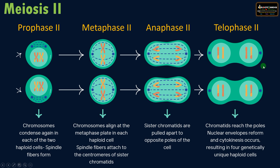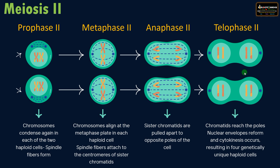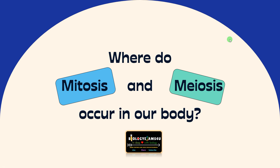Meiosis two is just like mitosis — two haploid cells divide to form four haploid cells — which is why meiosis two is also called equational division. The major difference between meiosis one and meiosis two is that in meiosis one, during anaphase, homologous chromosomes are separated, whereas in meiosis two, during anaphase two, sister chromatids are separated. In summary, meiosis results in the formation of four haploid cells from a diploid parent cell. Where do mitosis and meiosis occur in our body? Comment your answers.